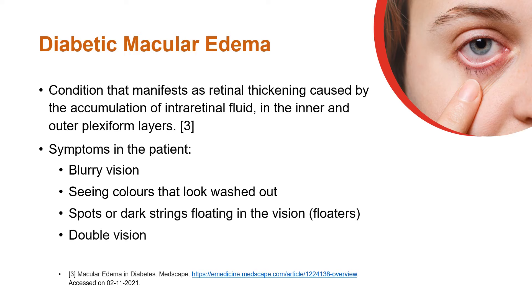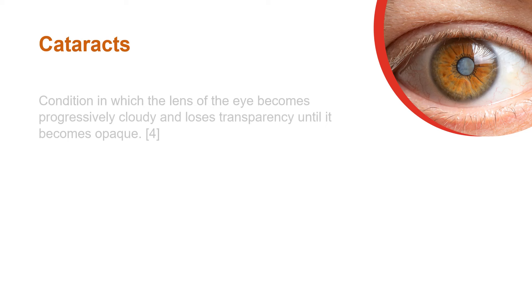Diabetic macular edema is a condition that manifests as retinal thickening caused by the accumulation of intraretinal fluid in the inner and outer plexiform layers. The symptoms of diabetic macular edema include blurry vision, seeing colors that look washed out, spots or dark strains floating in the vision, and double vision.